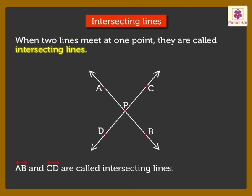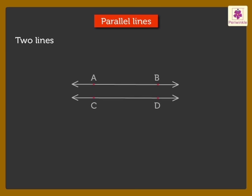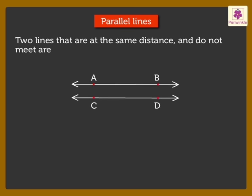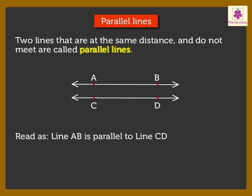Coming to parallel lines. Two lines that are at the same distance and do not meet are called parallel lines. Here, line AB and line CD are parallel lines. We read it as, line AB is parallel to line CD. We write it as shown.